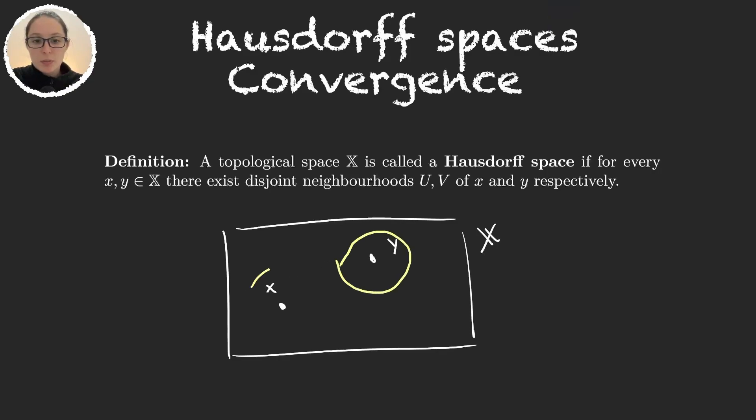Whenever I grab two elements x and y there always exist two open neighborhoods U and V that are disjoint. So U and V being neighborhoods means that they are open sets that contain x and V contains y. So these are two open sets disjoint.